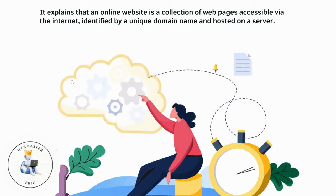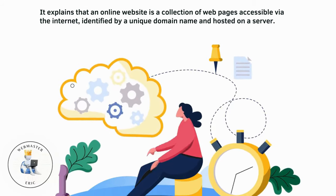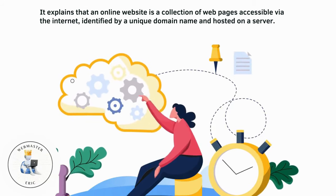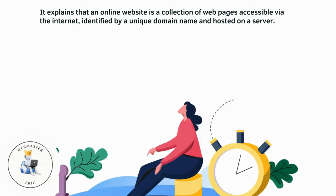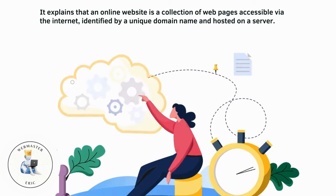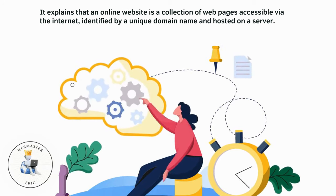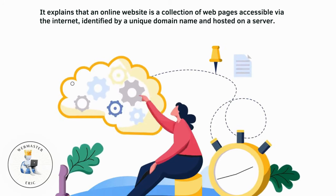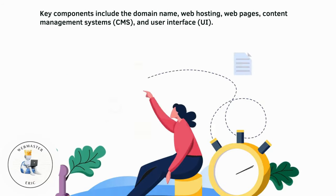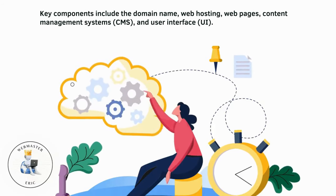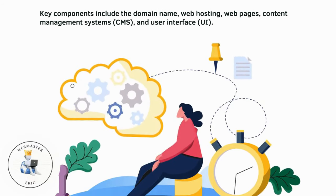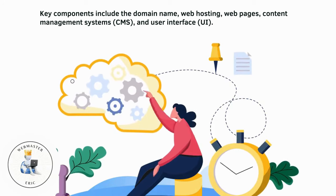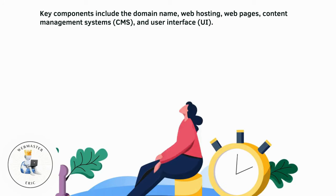It explains that an online website is a collection of web pages accessible via the internet, identified by a unique domain name and hosted on a server. Key components include the domain name, web hosting, web pages, content management systems, and user interface.